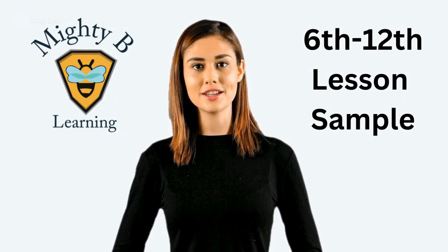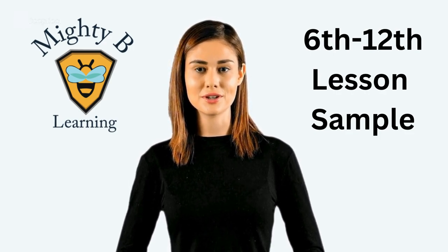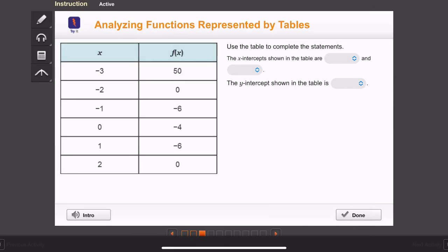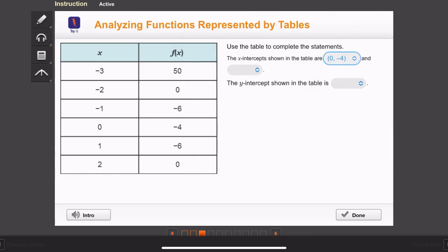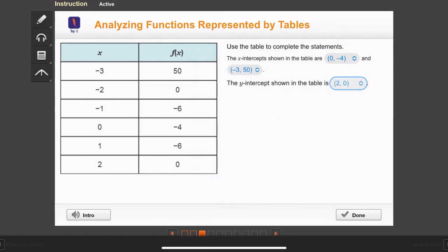Once they have completed a section of their lecture, they have a knowledge check. Notice what happens if a student gets the question wrong. Use the table of values to complete the statements. The x-intercepts occur when the output is zero. The y-intercept occurs when the input is zero.